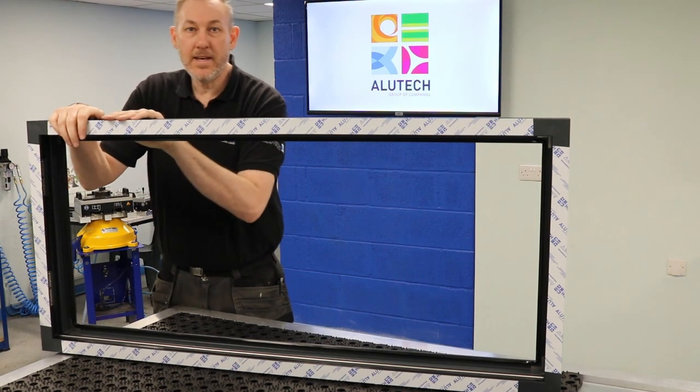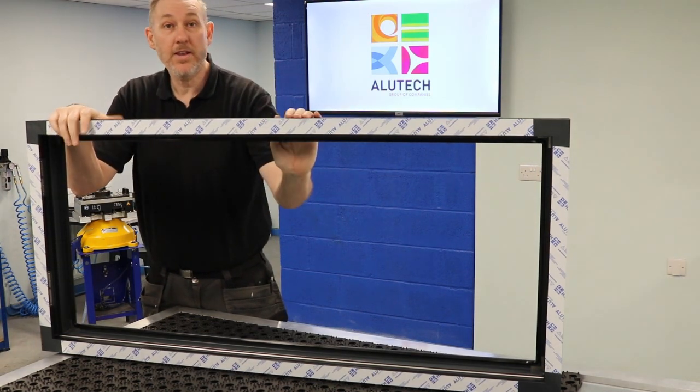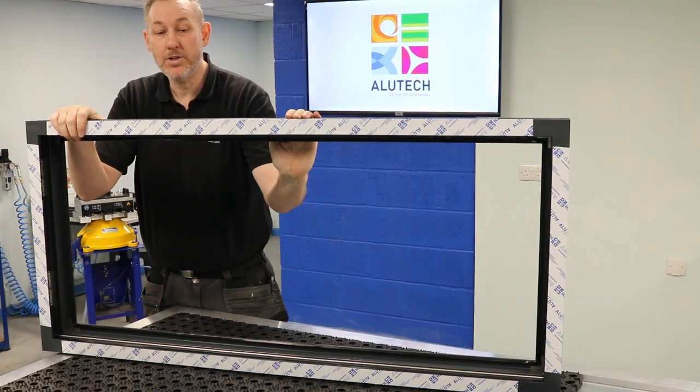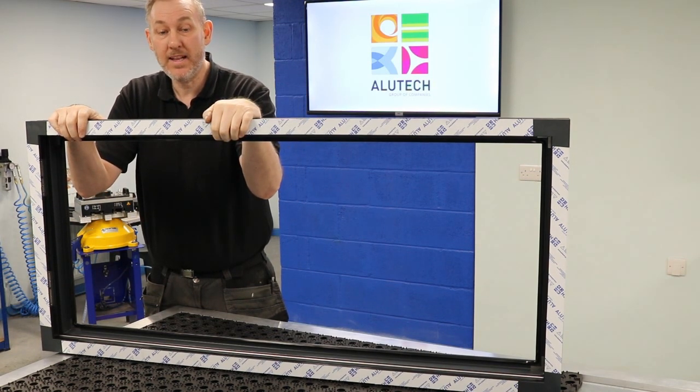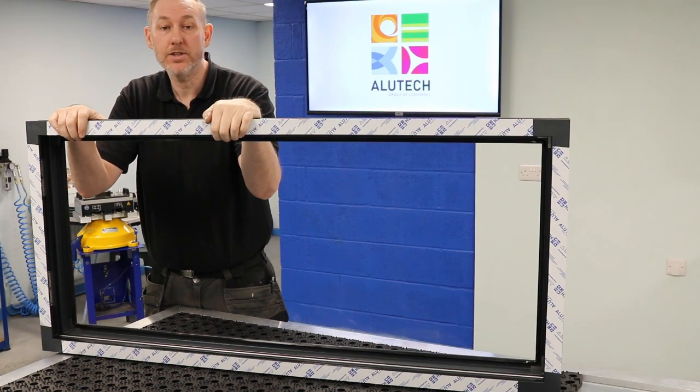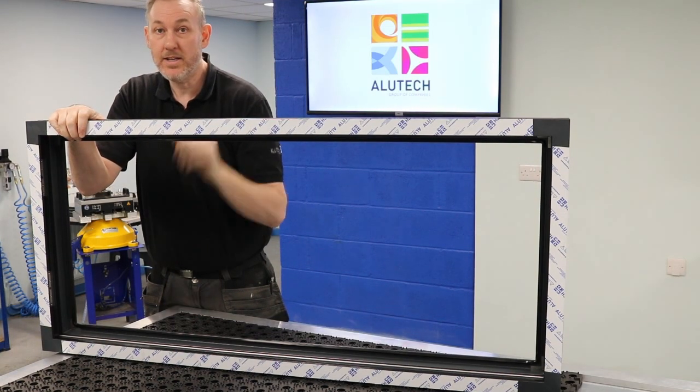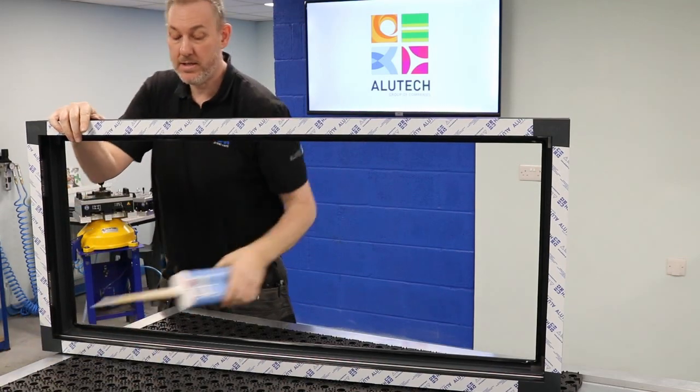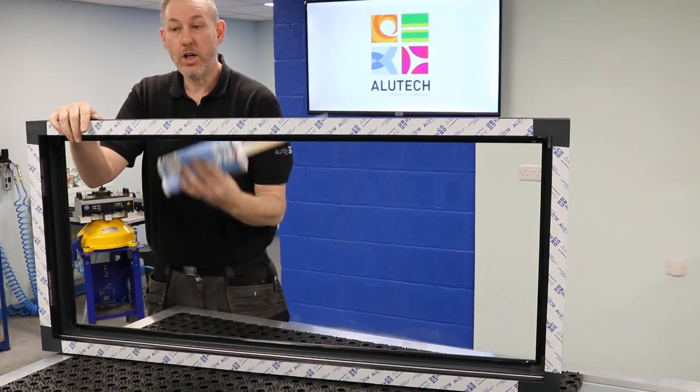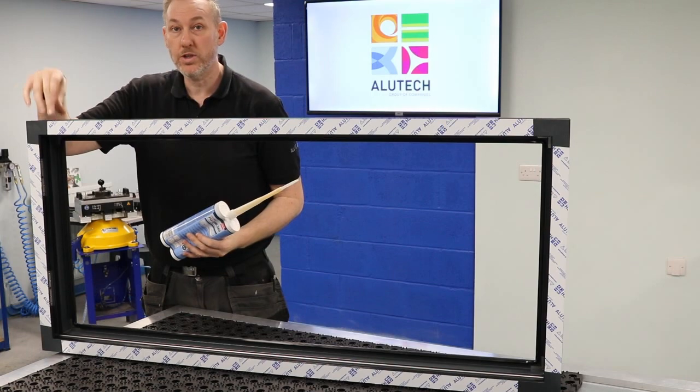So there we have the outer frame section completed. The only thing that we didn't cover was the drainage holes, which is covered in the actual technical manual. It'll give you all the diagrams and sizes for your drainage front face and sill face systems. And also what we just didn't do is the two pack glue, which is for the glue holes in the corners next to the mechanical screws.